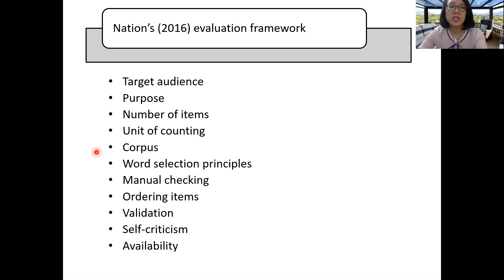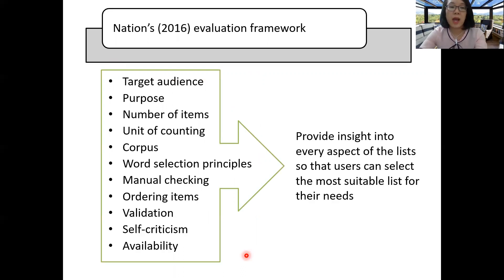Finally, Nation's 2016 framework appears to be the only available word list evaluation framework currently. This framework provides insight into every aspect of the list, from the target audience and purpose of the list to the whole process of making and validating the list. The evaluation will help teachers, learners, and list users select the most suitable list for their needs.